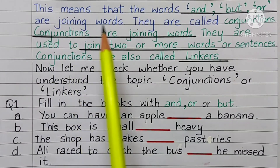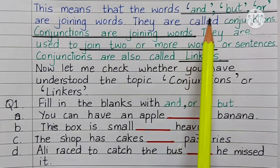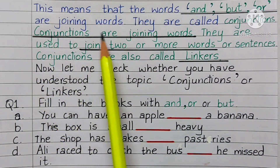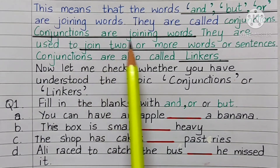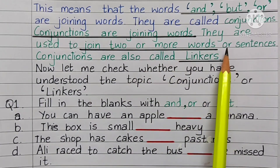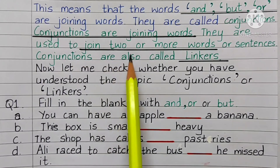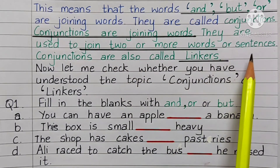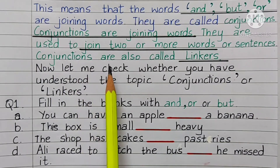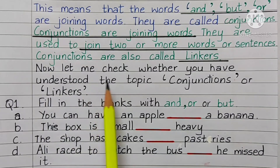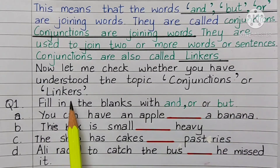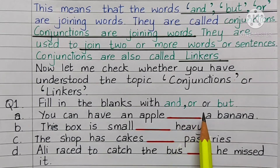This means that the words 'and,' 'but,' and 'or' are joining words. They are called conjunctions. Conjunctions are joining words used to join 2 or more words or sentences. Conjunctions are also called linkers. Now let me check whether you have understood the topic — fill in the blanks with 'and,' 'or,' or 'but.'